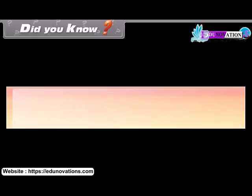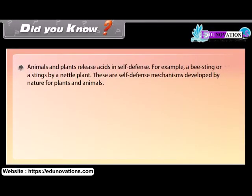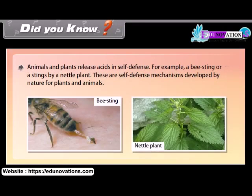Did you know? Animals and plants release acids in self-defense. For example, a bee sting or stings by a nettle plant are self-defense mechanisms developed by nature for plants and animals.